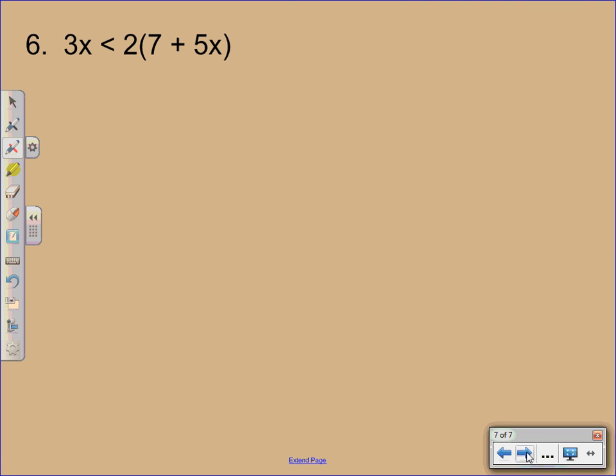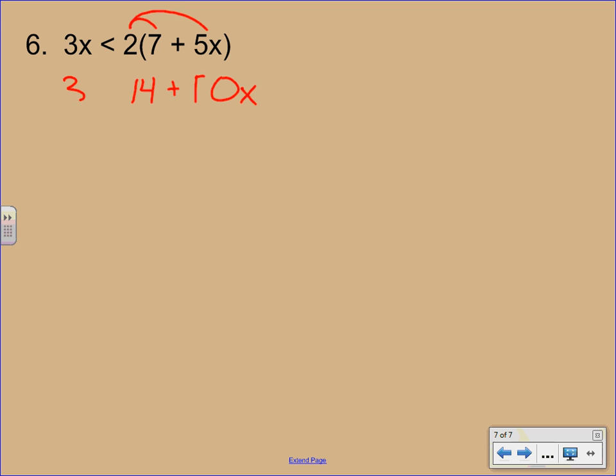Alright, one more to go here. We are going to start by distributing 2. Everything on that left hand side can just come down. We've got the 3x there. So we have 3x is less than 14 plus 10x. Now we have to get all the x's over to one side. So we're going to subtract 10x from both sides. Make sure you bring the x along. I noticed some of you are just doing minus 10 on each side. It is a 10x. So make sure that's there.